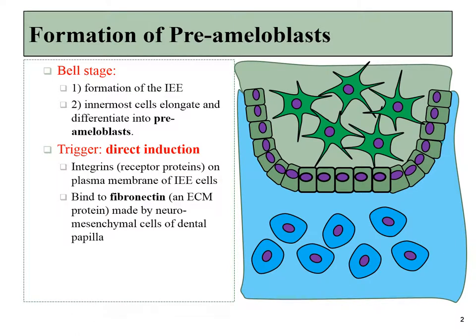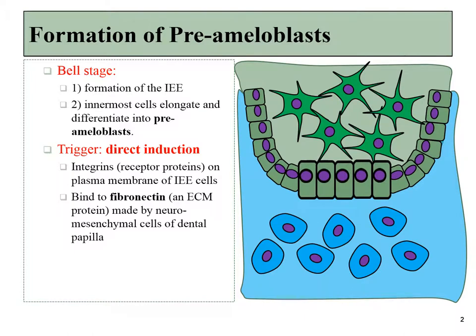It's during the bell stage that the inner enamel epithelial cells differentiate into pre-ameloblasts. This occurs when epithelial plasma membrane proteins called integrins bind to the correct type of fibronectin found in the extracellular matrix. This particular fibronectin is special because it's made by neuromesenchymal stem cells — neural crest cells that migrated from the central nervous system to become a special type of mesenchymal stem cell. So it's this fibronectin that induces the formation of pre-ameloblasts.